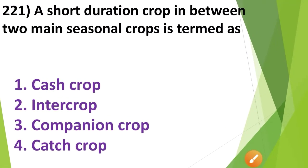A short duration crop grown in between two main seasonal crops is termed as: 1. Cash crop, 2. Intercrop, 3. Companion crop, 4. Catch crop. The correct answer is Option No. 4 — catch crop.